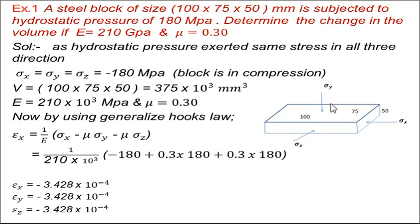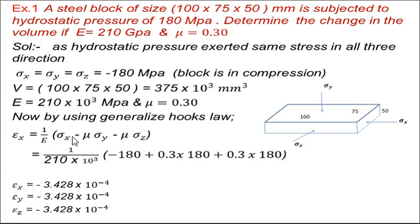The total volume of this block is found by multiplying all the given dimensions. The modulus of elasticity is given in GPa, so we convert it to MPa by multiplying by 10 raised to 3, giving 210 × 10³ MPa. Poisson's ratio is given as 0.30. Now, by using the generalized Hooke's law in all three directions, which we already derived, epsilon x is the strain in the x direction.